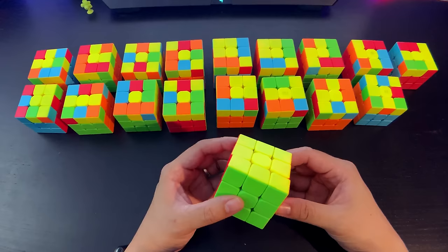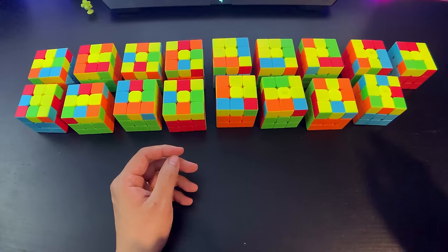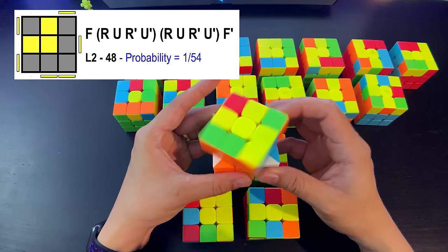Going through the full list of OLLs, I found that there were another four cases that were really similar to FruRuff and Ruff Fur, and they are these four cases right here. This one can be solved with front, and not just one sexy, but two sexy moves.